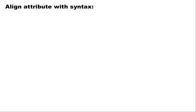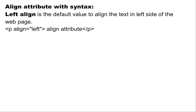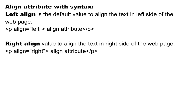The align attribute syntax — left align: left align is the default value to align text to the left side of the webpage. The syntax is: open the p tag, then 'align' is the attribute name, and 'left' is the value of the attribute, then some content, and close the p tag.